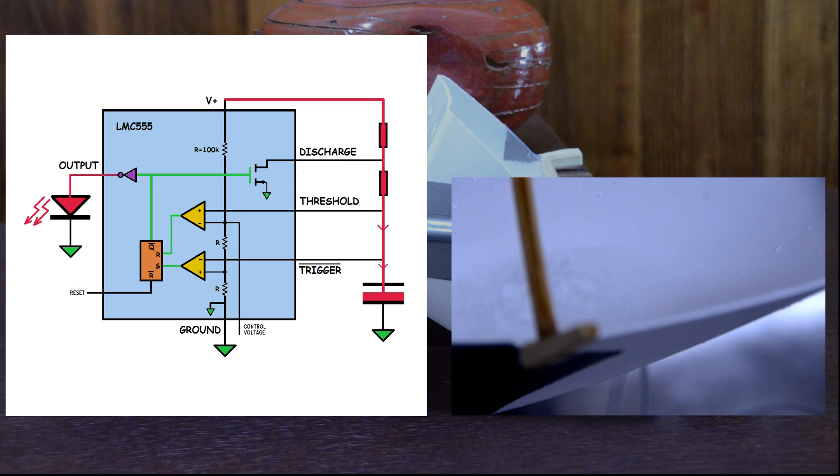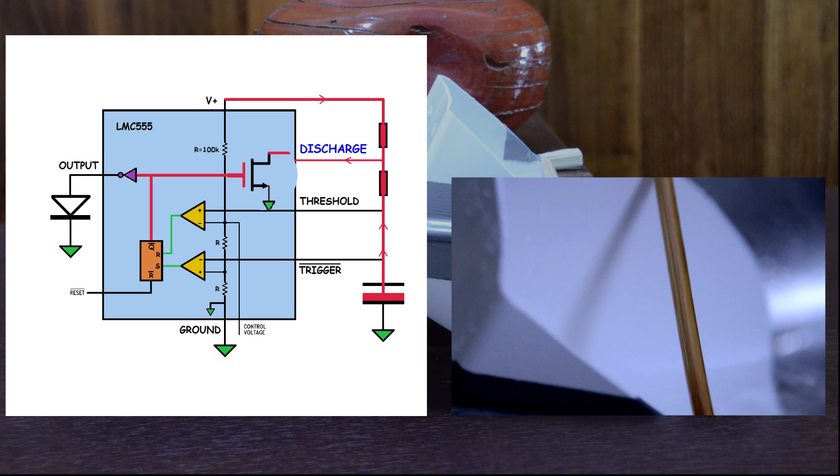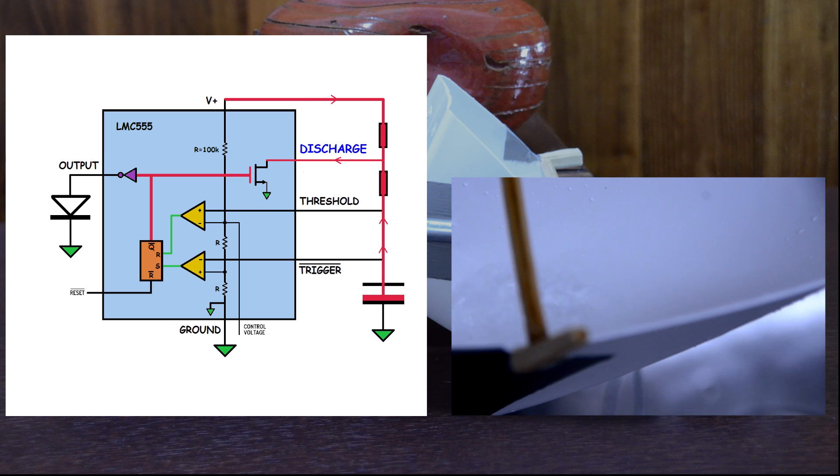When the rising voltage exceeds the upper boundary, a flip-flop remembers the event and turns on a discharge path for the voltage to fall.